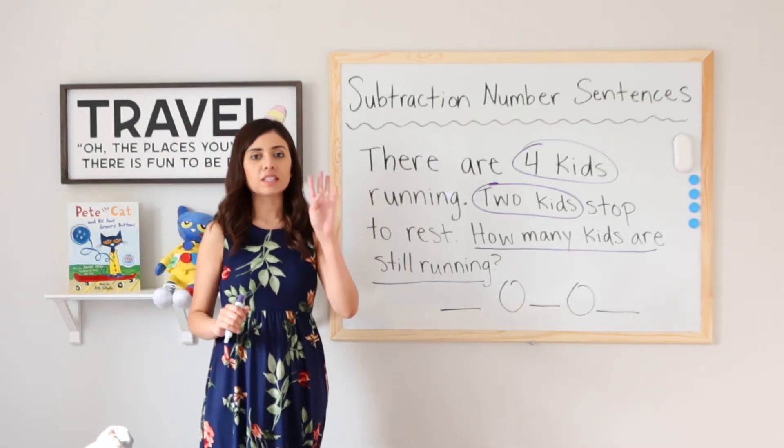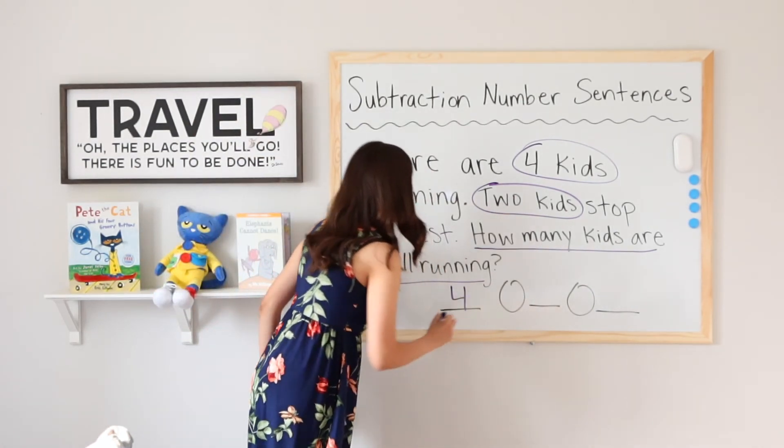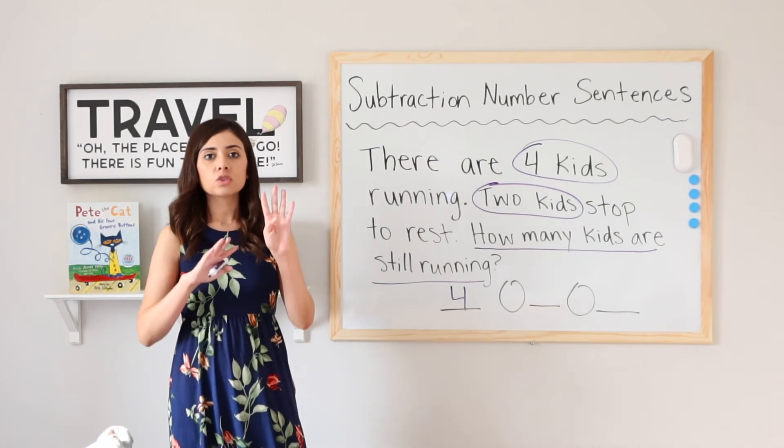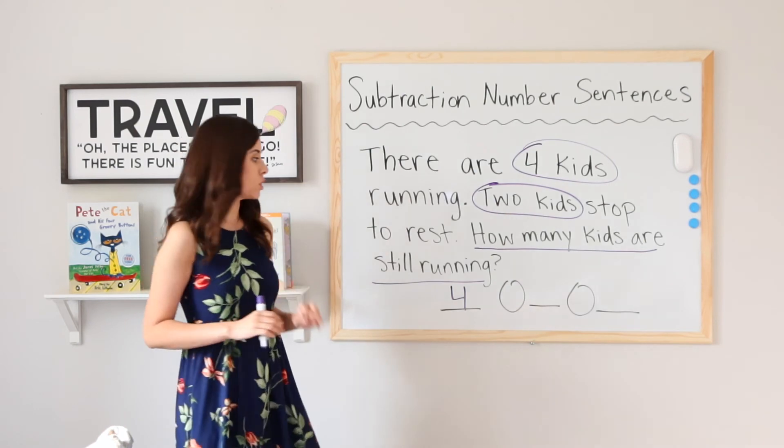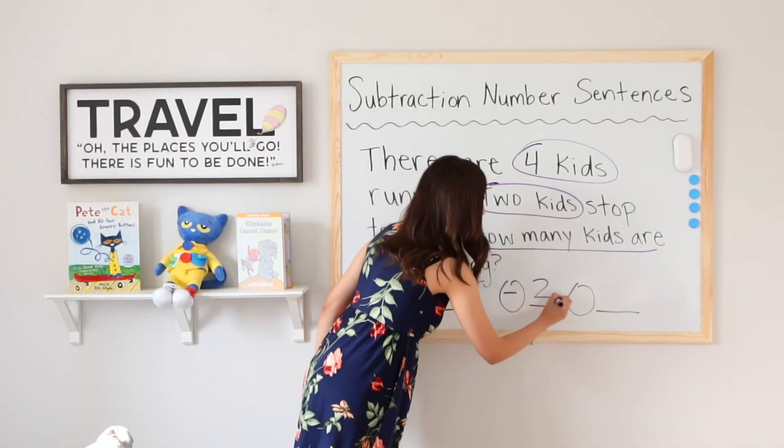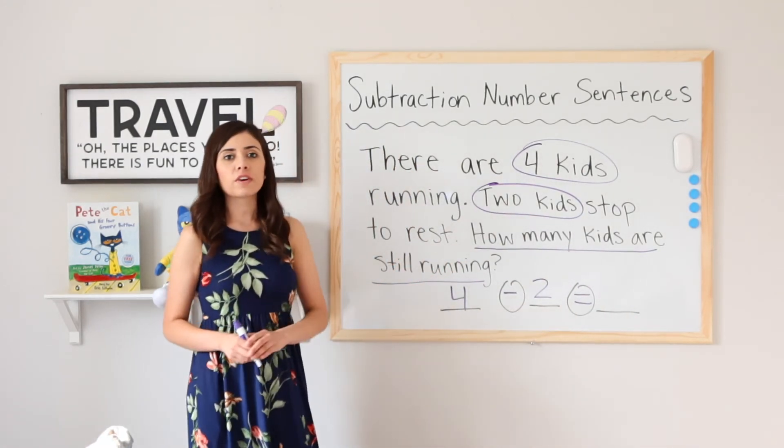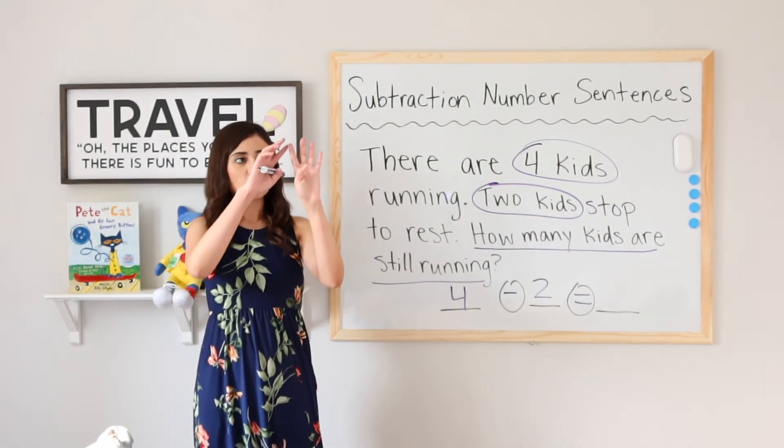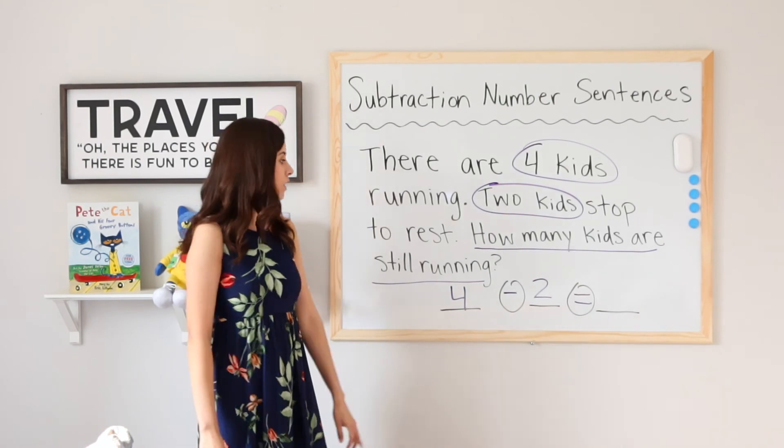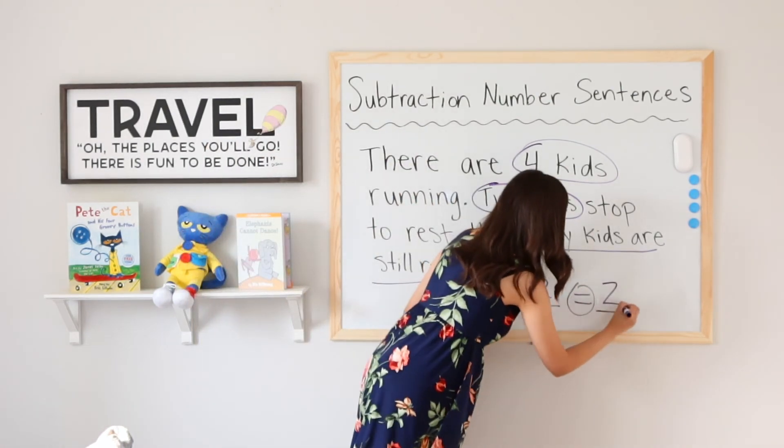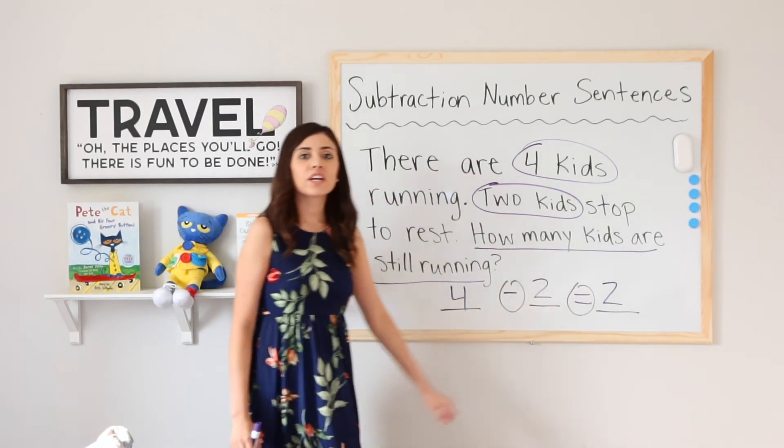So let's go ahead and think about this problem. I have 4 kids running. That is my whole. Let's write that down. So I have 4 kids running. 2 kids stop to rest. 1, 2. So we are taking away those 2. Minus 2 equals how many kids are still running? So if I have 4 kids running, 2 stop, how many do I still have left? 1, 2. Very good. That means that 4 minus 2 equals 2. Great job, everybody.